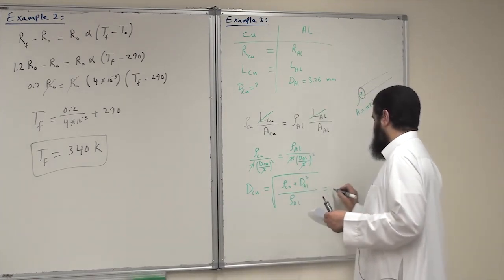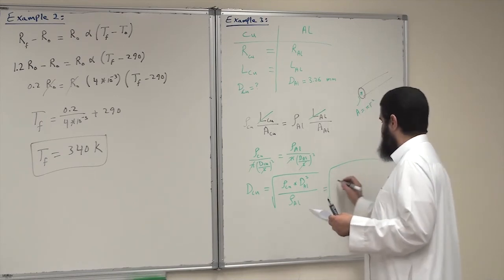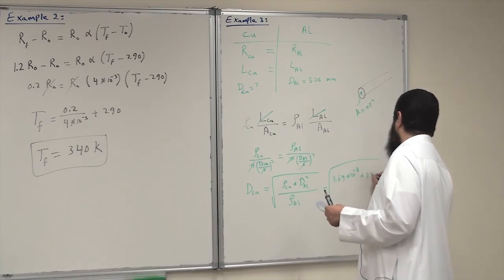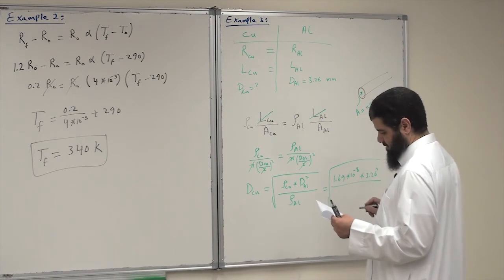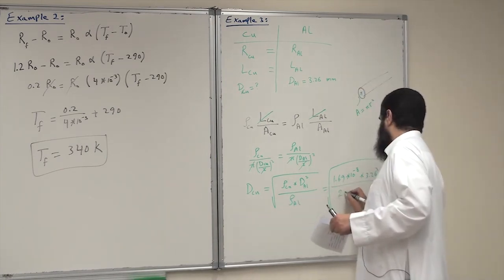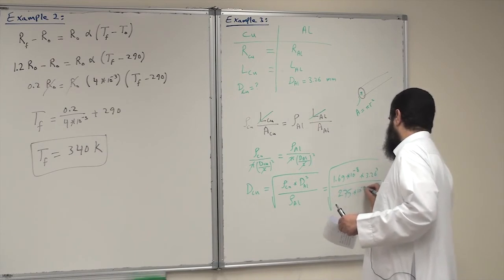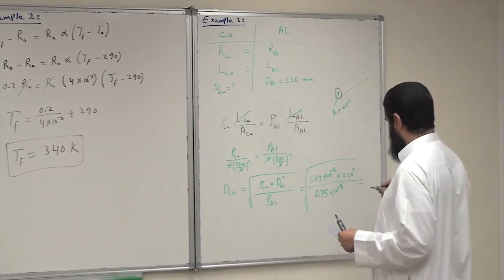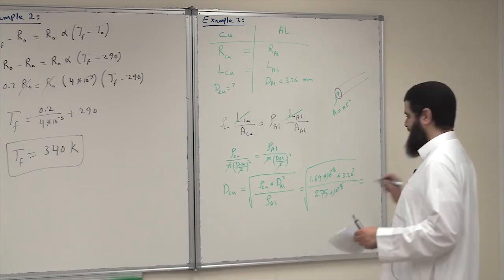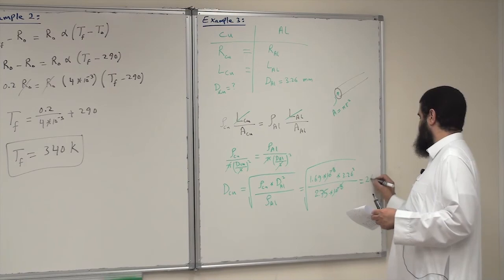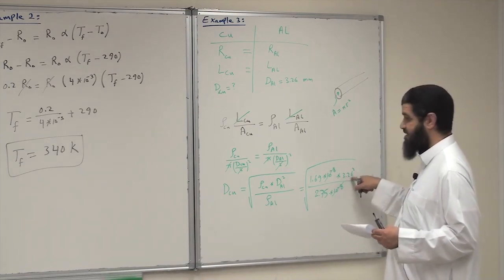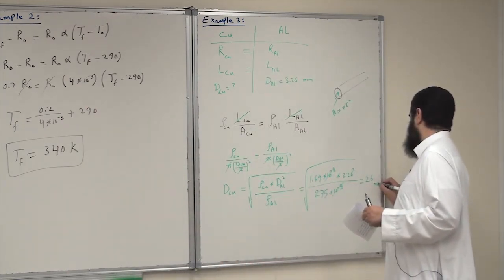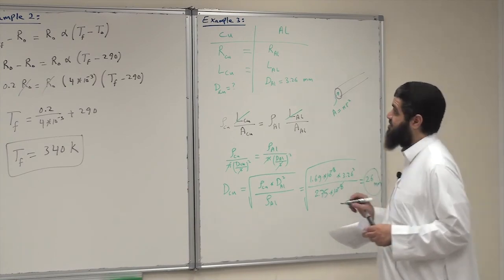Plugging in the numbers: square root of (1.69×10⁻⁸ times 3.26² divided by 2.75×10⁻⁸). The 10⁻⁸ terms cancel and we get d_copper equal to 2.6 mm. This is the same unit as the given 3.26 mm, so the diameter of the copper wire must be 2.6 millimeters.